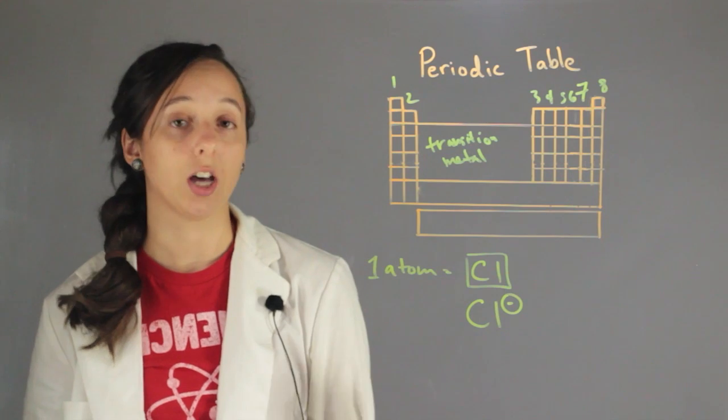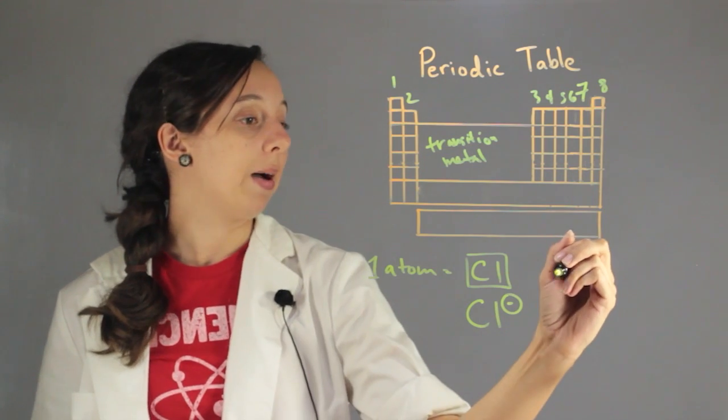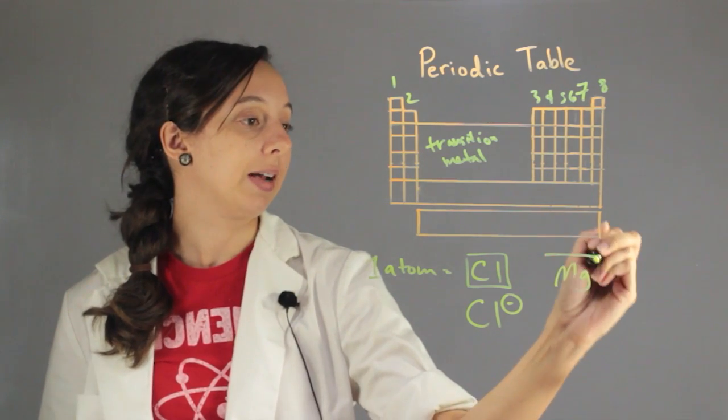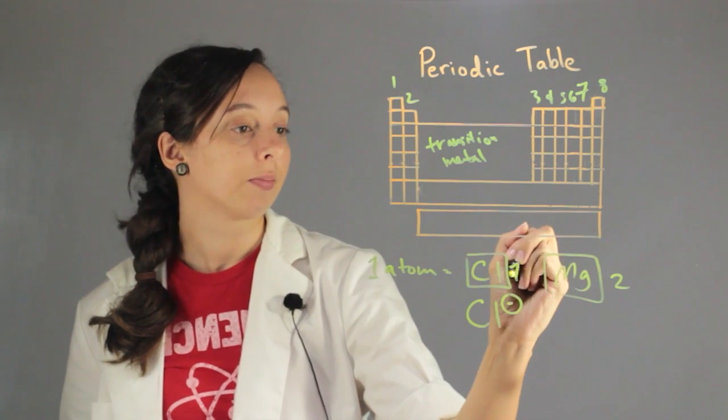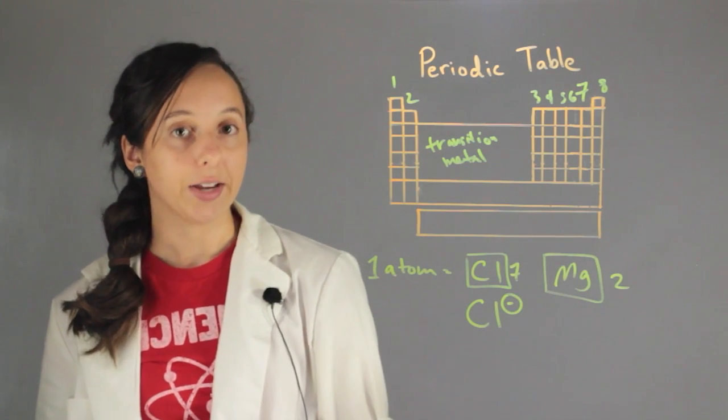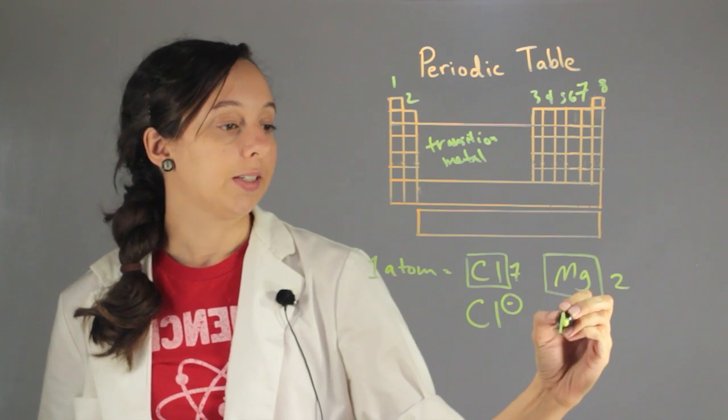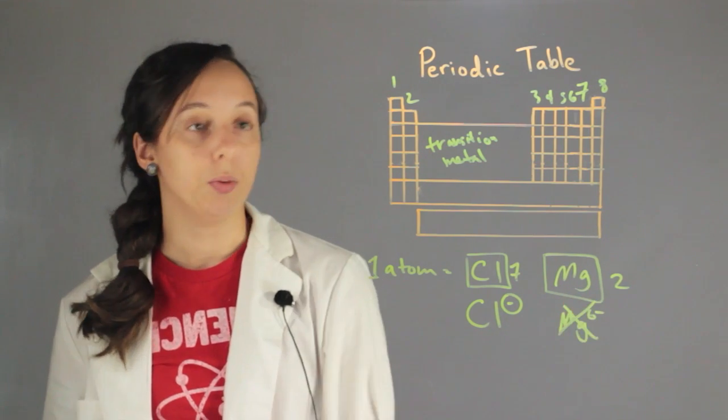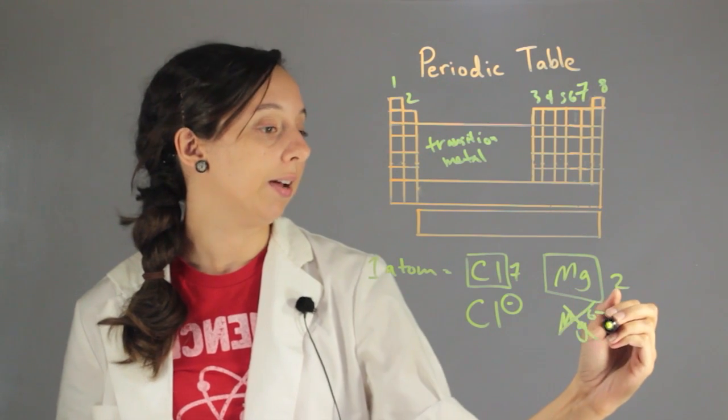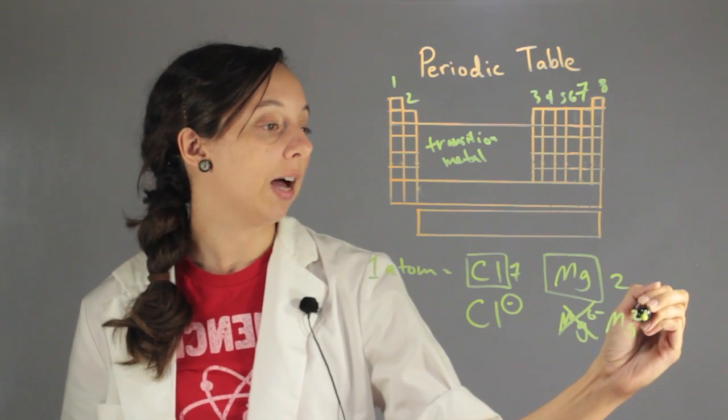Let's take a look at the opposite example. So how about magnesium? Now magnesium is in group two, which means it has two valence electrons. And instead of adding six, so we're not going to say magnesium six minus, we're going to simply remove the two. So we're going to say it has magnesium two plus.